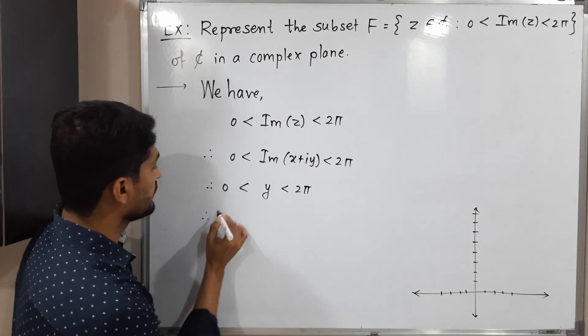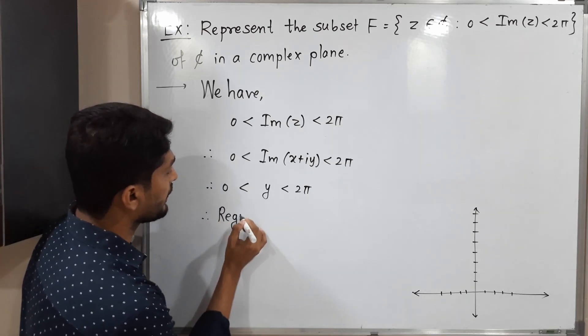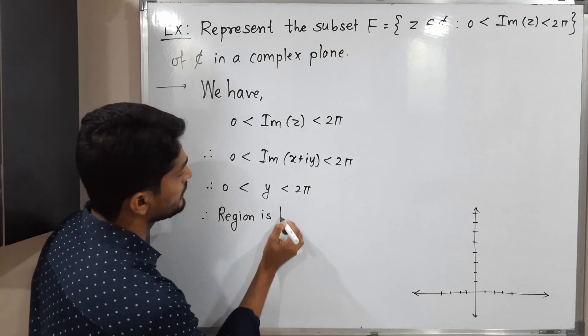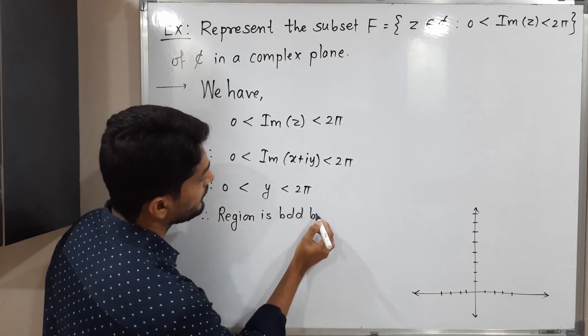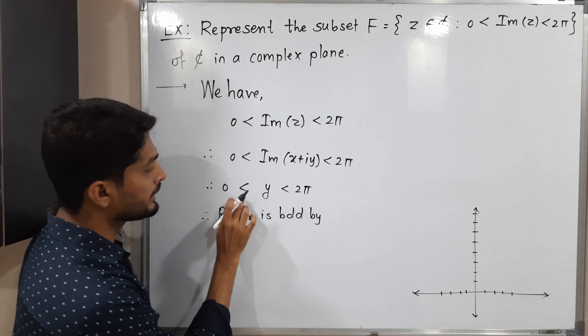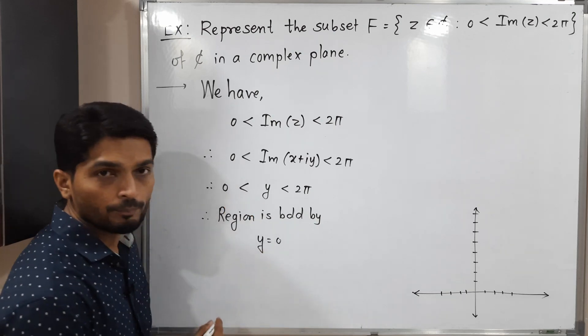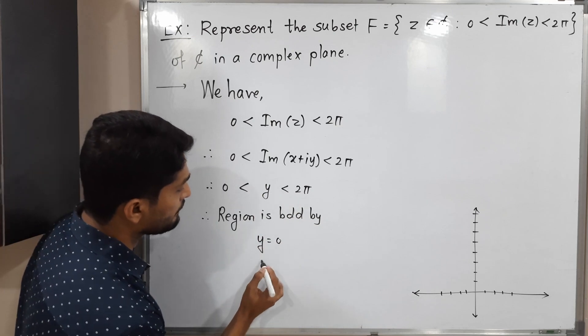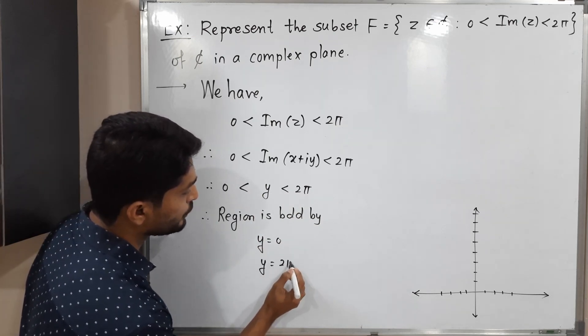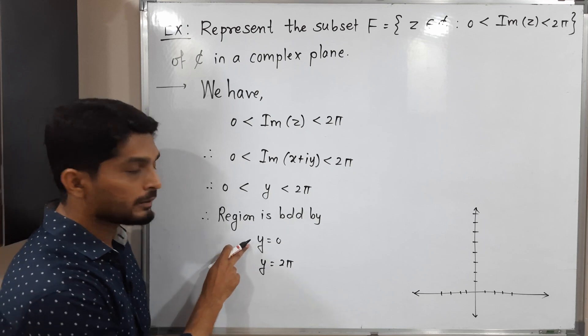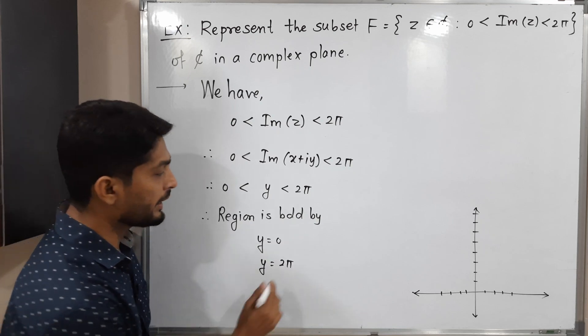Therefore, region is bounded by... I will replace this inequality by equality, so we will have y equals 0. This inequality will be replaced by equality, so y equals 2π. The region is bounded by y equals 0 and y equals 2π.